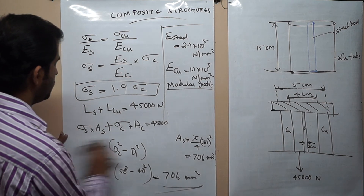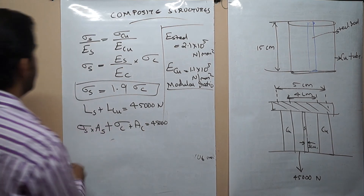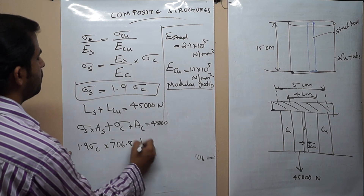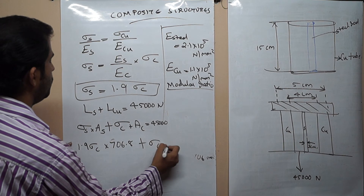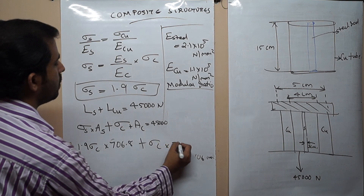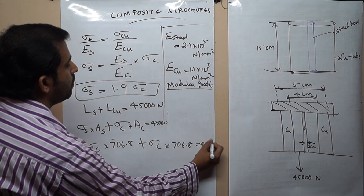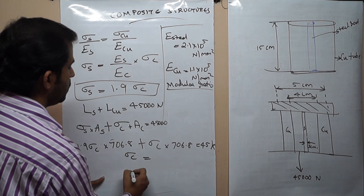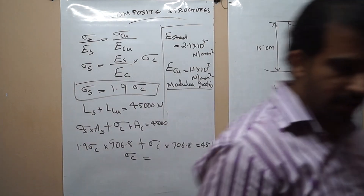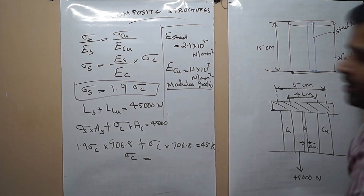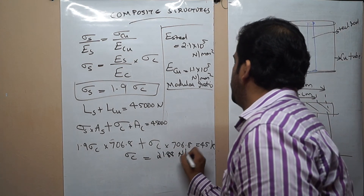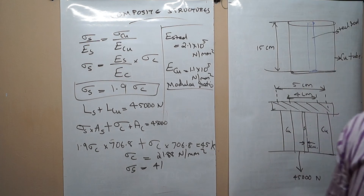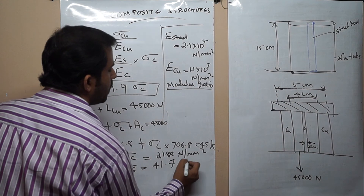Substituting the values: 1.9 sigma_C into 706.8 plus sigma_C into 706.8 equals 45,000. Solving this, we get sigma_C equals 21.88 N/mm² and sigma_S equals 41.7 N/mm².